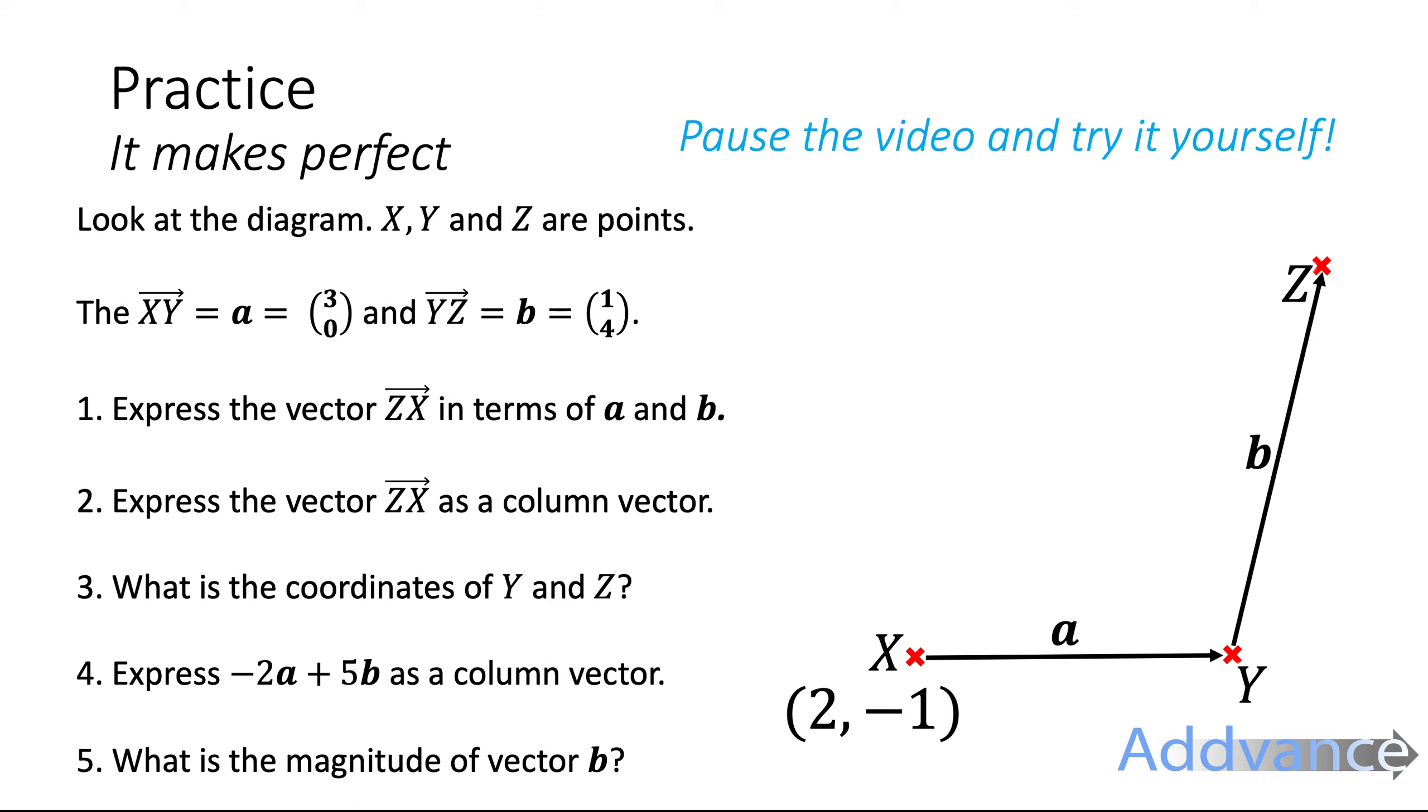What are the coordinates of Y and Z? So we know the coordinate of X and from X we can go to Y by the vector a and then from Y to Z we can go up the vector b to find the coordinate of Z.